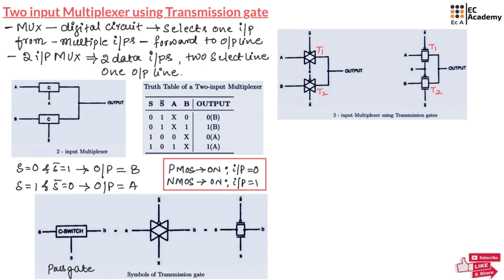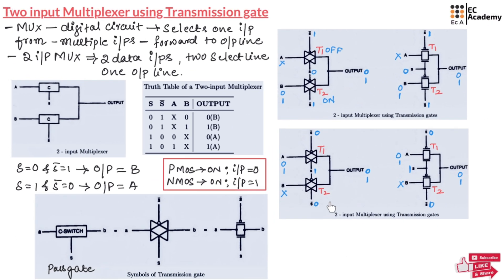Let us understand how these two input multiplexers work with an example. Both the circuits will work in the same way. If S is equal to 0, S bar will be equal to 1. In the first transmission gate, S bar is equal to 1 and S is equal to 0, which means both the PMOS and NMOS will be off, so this transmission gate will be off. In the second transmission gate, S is equal to 0 and S bar is equal to 1, so both PMOS and NMOS will be on, meaning transmission gate 2 will be on. Let us consider the second case where S is equal to 1 and S bar is equal to 0 in both the transmission gates.